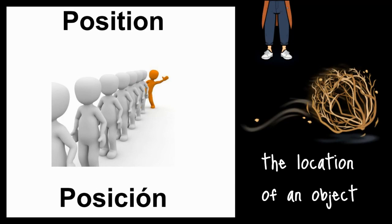Our first word is position. Position is the location of an object. In this example we have a person positioned at the back of the line. Over here there is a tumbleweed positioned in front of me.